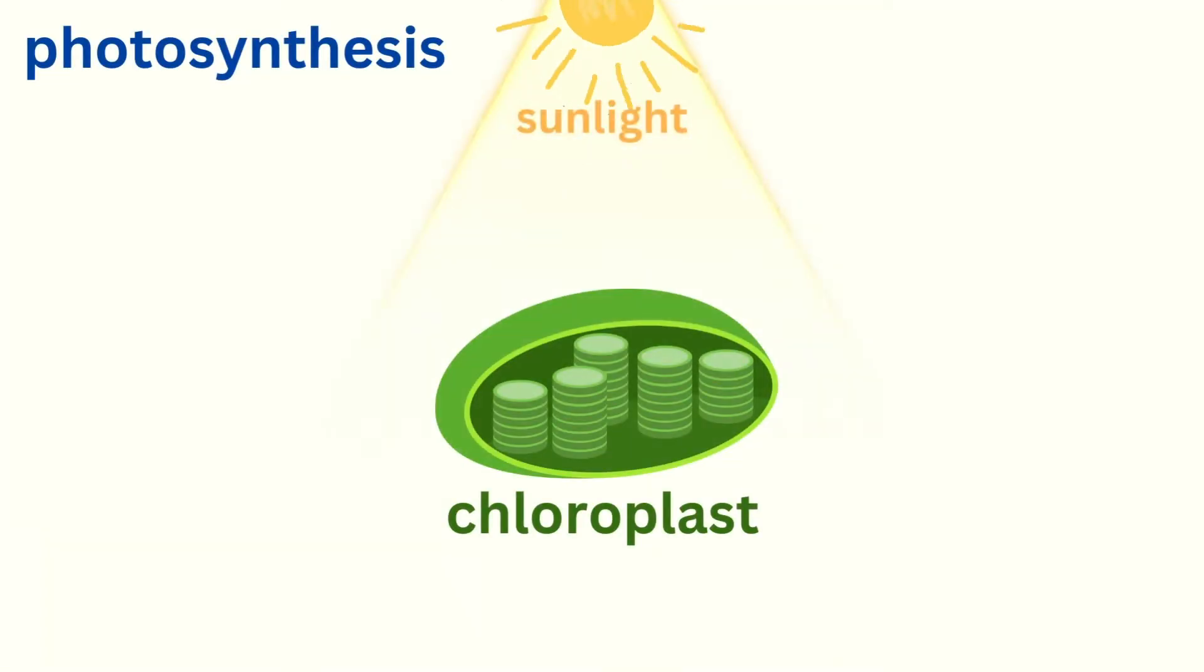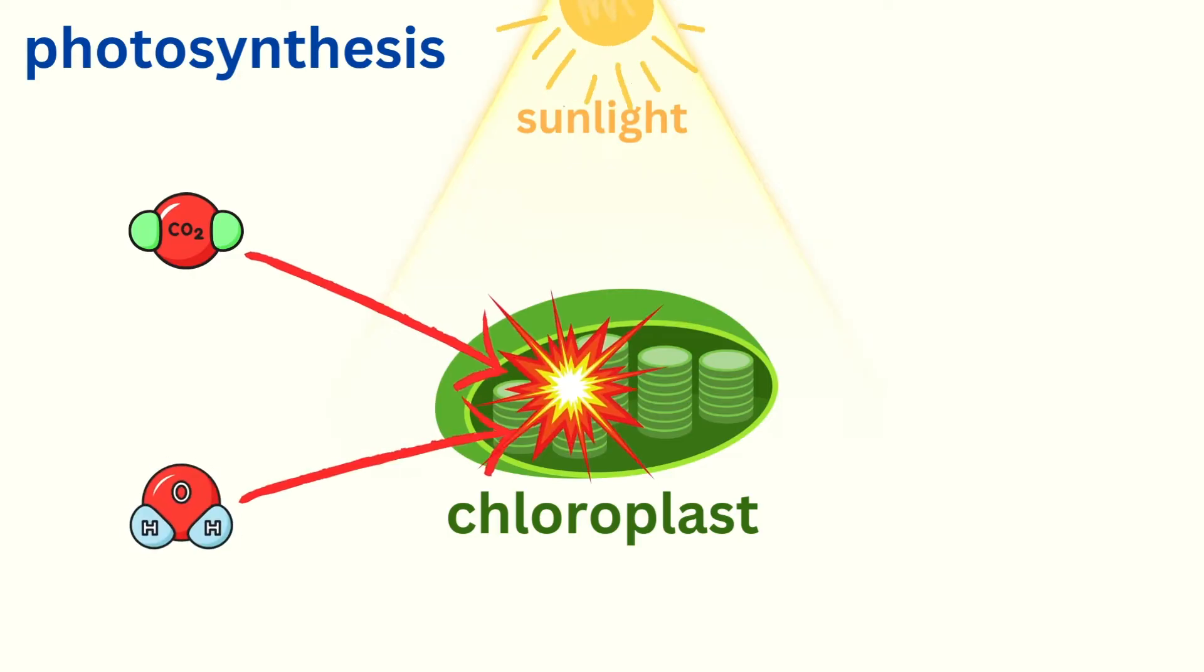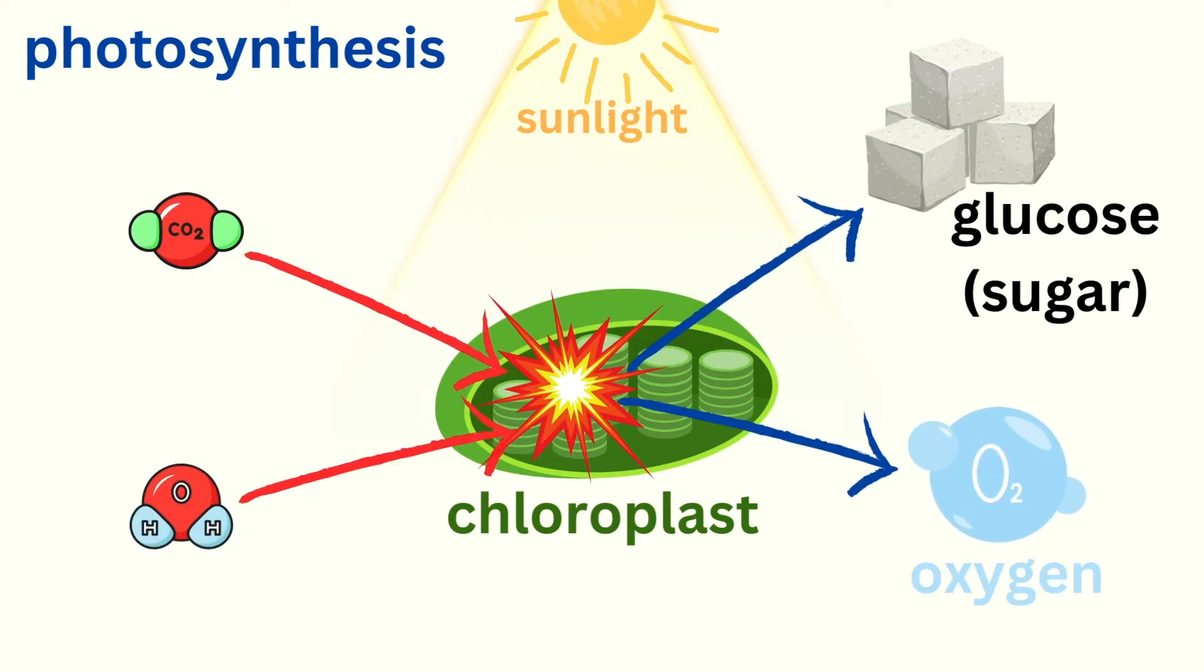When sunlight hits the chlorophyll in the chloroplasts, it starts the process of photosynthesis. Chlorophyll absorbs the sunlight and uses that energy to transform carbon dioxide and water into glucose, the plant's food. It also gives off oxygen.